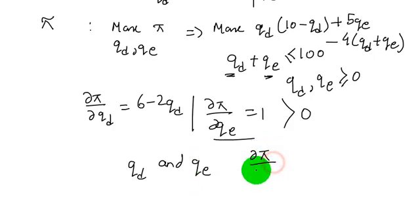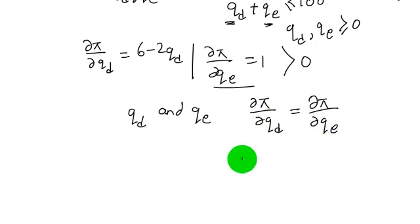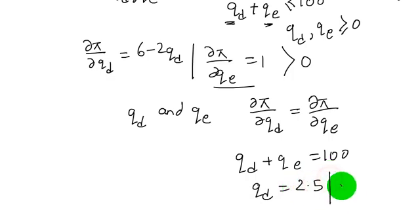...such that ∂π/∂qd = ∂π/∂qe, and qd + qe = 100. Upon solution we find qd = 2.5 and qe = 97.5.